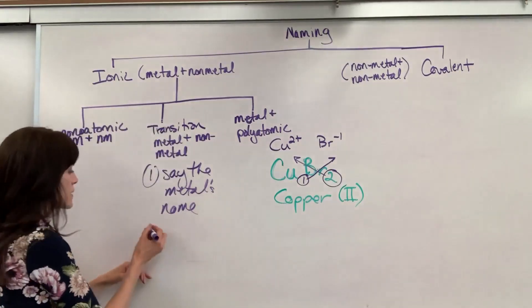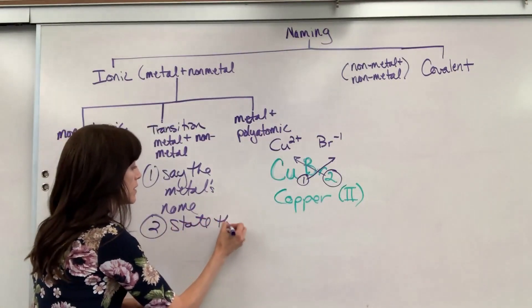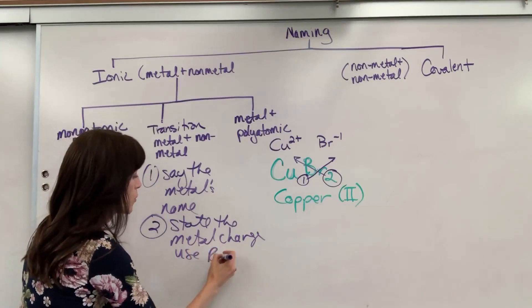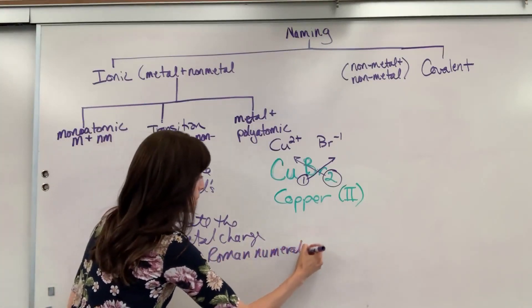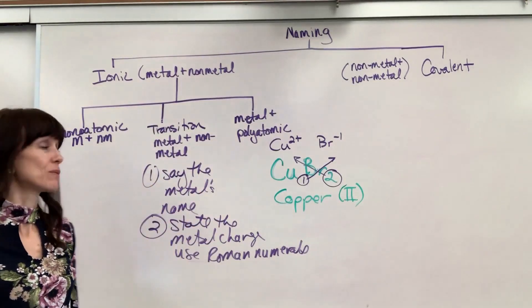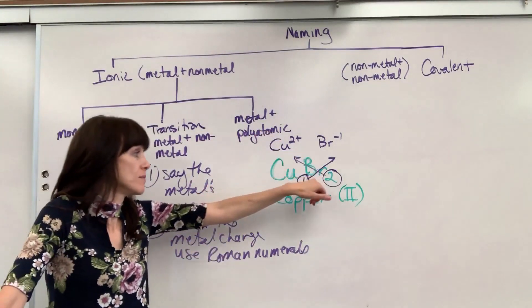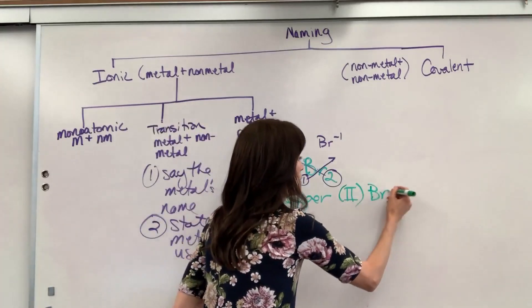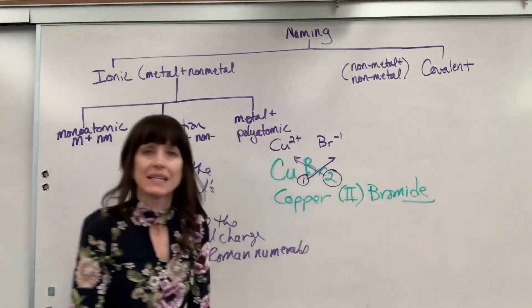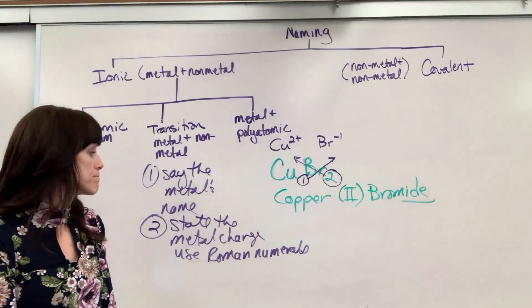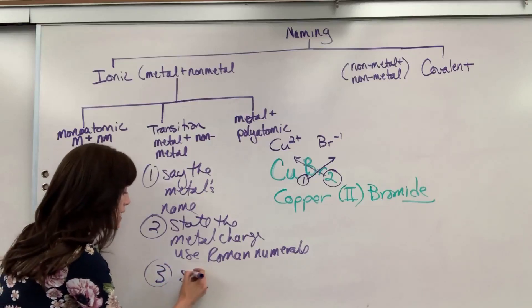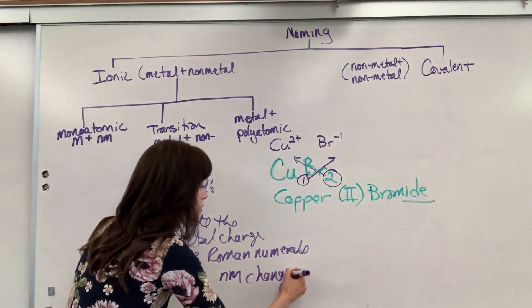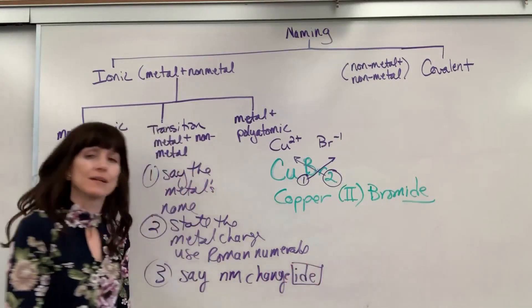So let's write down number 2: state the metal charge using Roman numerals. Now our last step, really easy, is what we did over here. You simply take the nonmetal, that bromine, change the ending to -ide. So this is going to be copper II bromide. Notice that -ide. We don't say bromine, we say bromide. So step three, you say the nonmetal but change the ending to -ide.